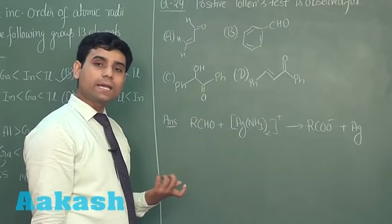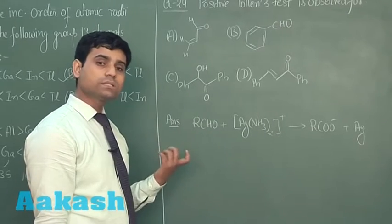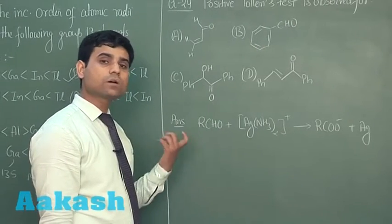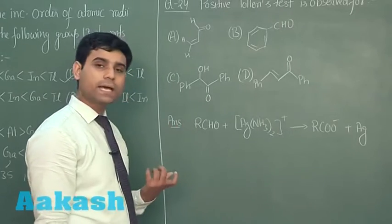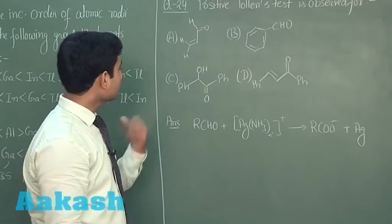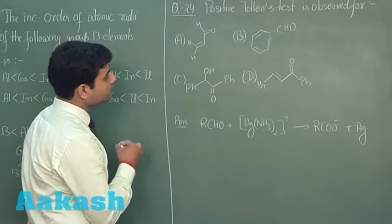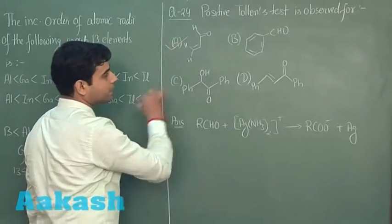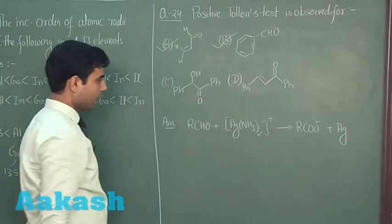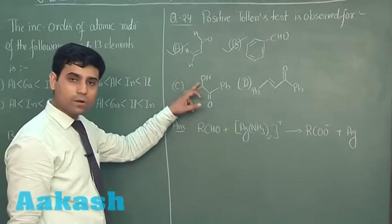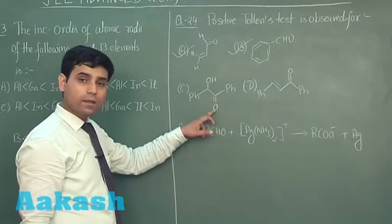Also alpha hydroxy ketones gives us Tollens test because they oxidizes to alpha beta diketone. The correct answers are option A which is an aldehyde, option B is also an aldehyde and this is our alpha hydroxy ketone.